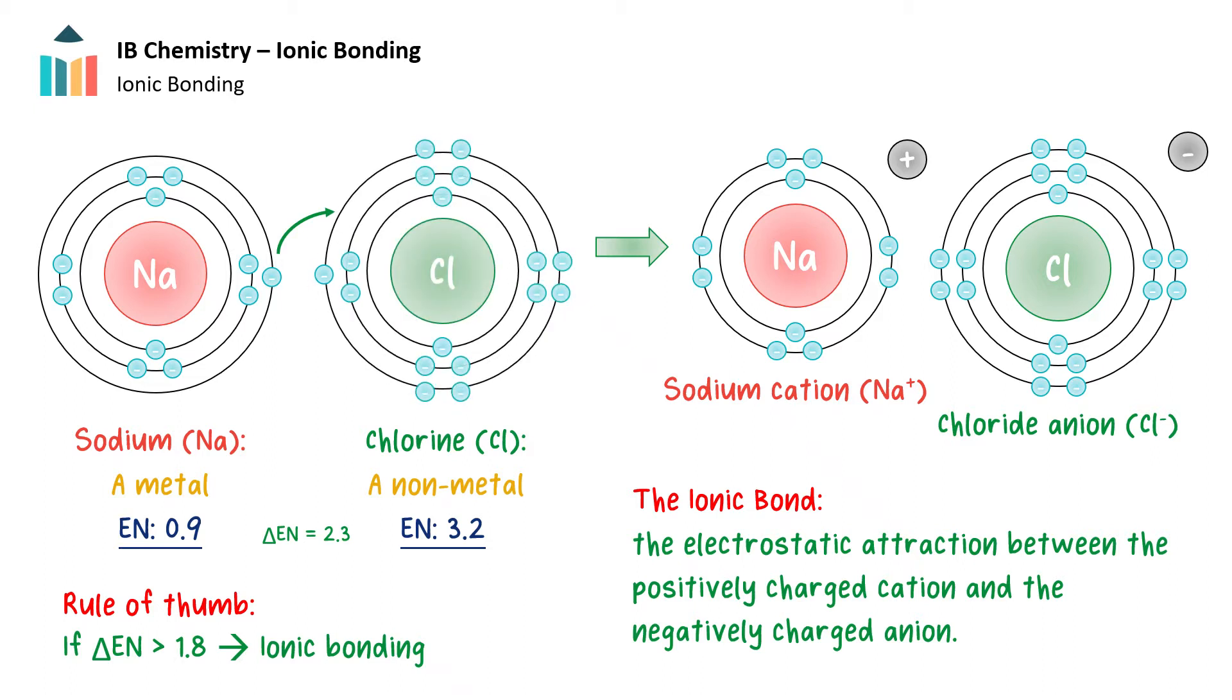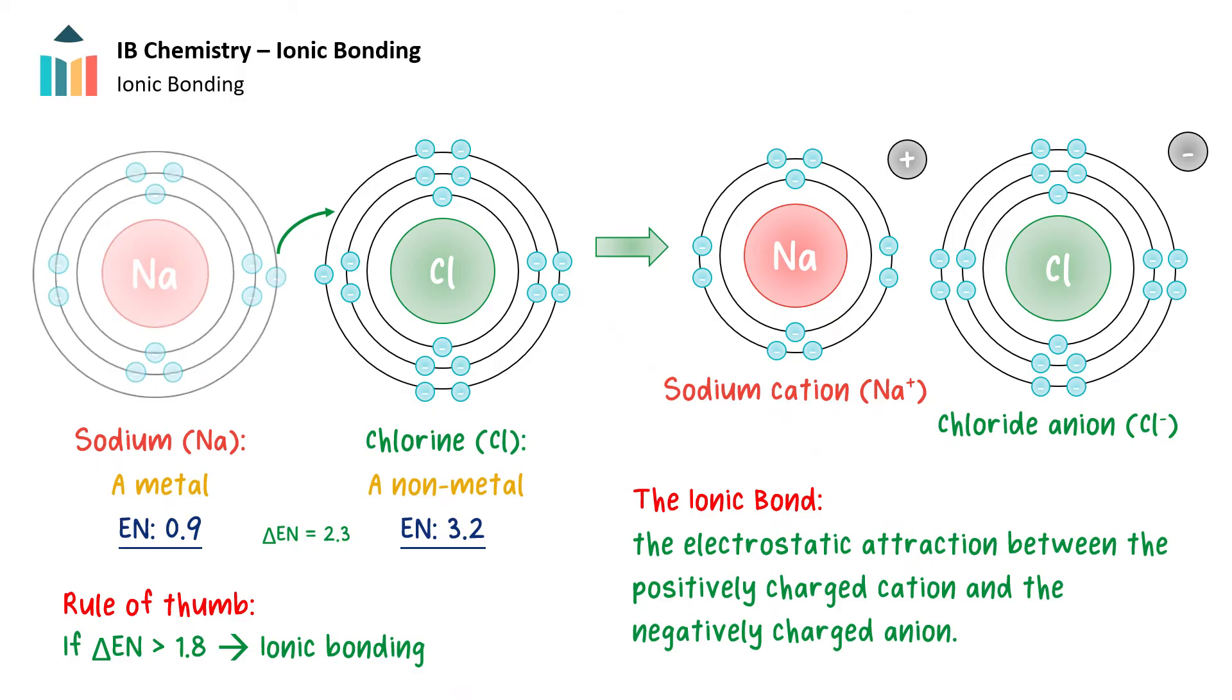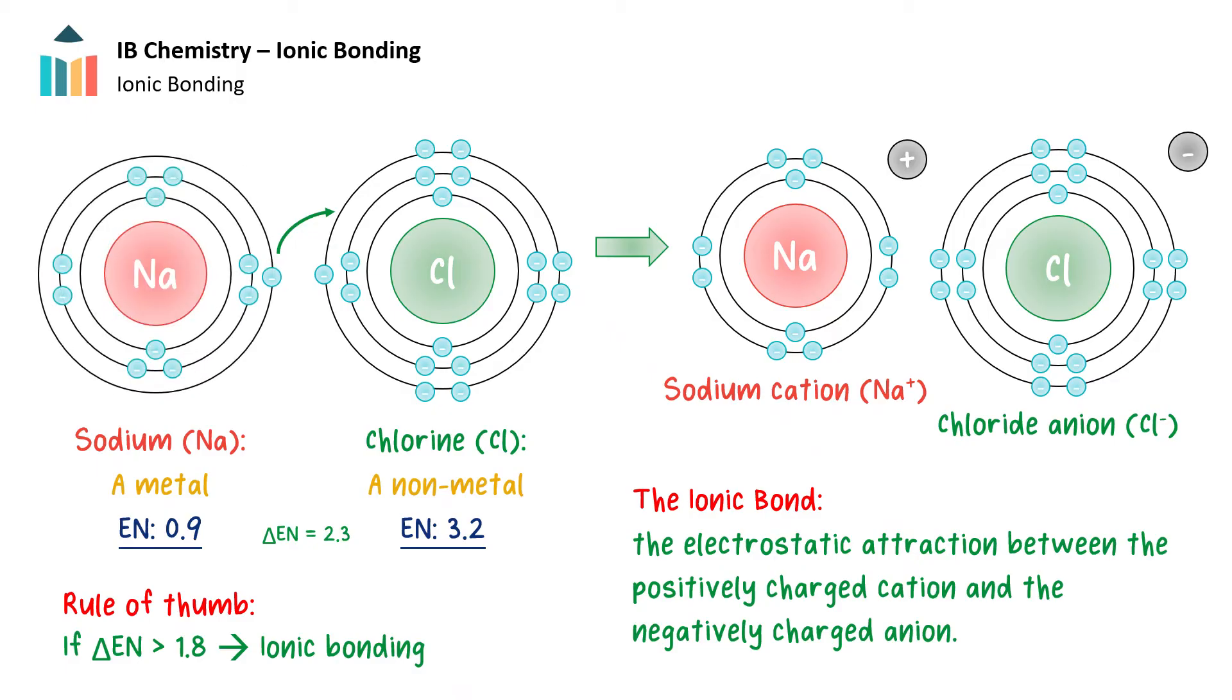This means chlorine has a much stronger attraction for the electrons in a bond than sodium. The difference in electronegativity values is 2.3, and the general guideline states that if this difference is greater than 1.8, the more electronegative atom will take the electrons from the less electronegative atom completely—no sharing, but a total transfer of electrons.